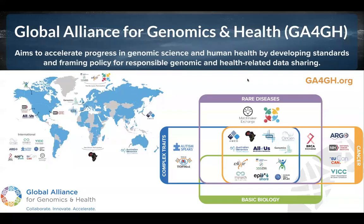Let me introduce you to the Global Alliance for Genomics and Health, or GA4GH. This is an organization that hopes to accelerate progress in these fields by developing standards and framing policy for responsible genomic and health-related data sharing. Jules, Peter, Melissa Handel — one of our BOSC keynotes this year — and myself belong to the Monarch Initiative, which is a driver project of GA4GH. Melissa and the Monarch Initiative led the work stream on clinical and phenotypic data capture for the past four years.